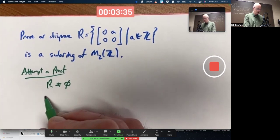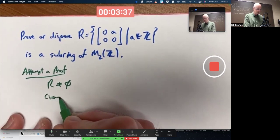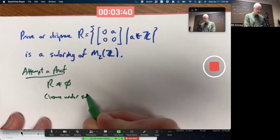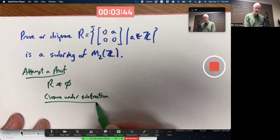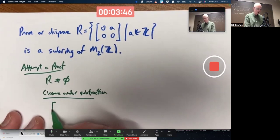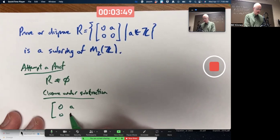So, let's check closure under subtraction. Closure under subtraction. Is it true or not? Give me any two matrices in R. Is there a difference also in R?